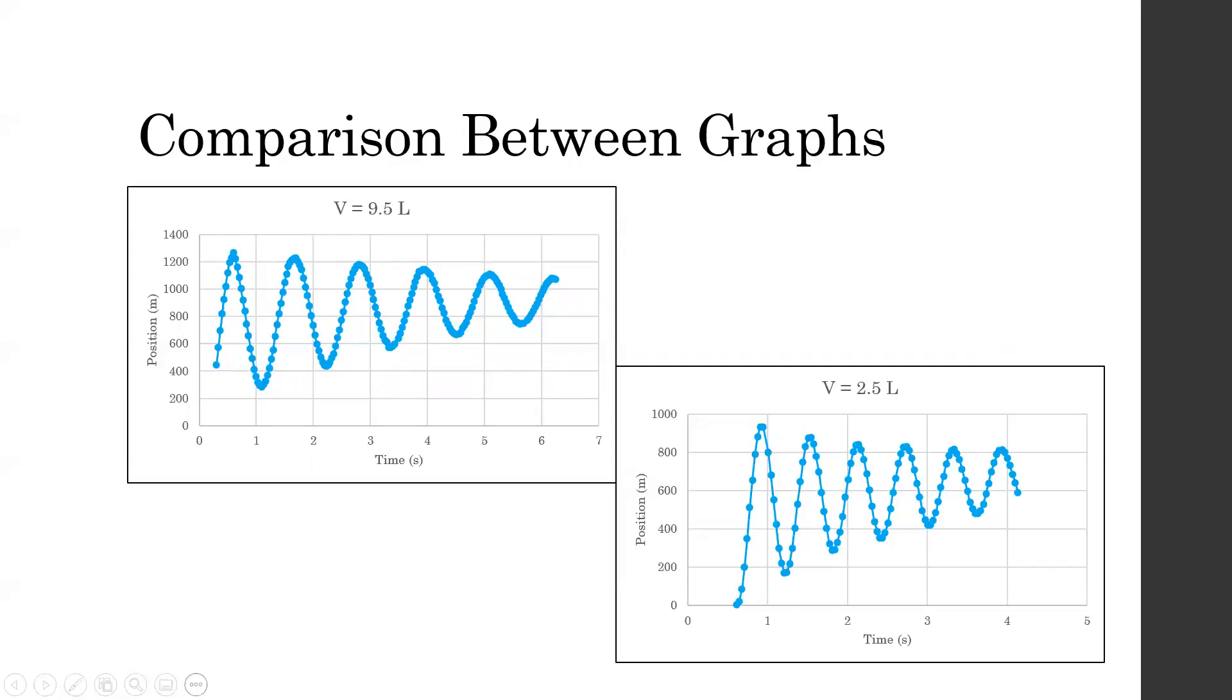This is a comparison between the longest period of oscillation and the second shortest period. The data points show a clear oscillatory motion with consistent periods for both. The important distinction between the two is the number of data points. The trial at 9.5 liters has many more data points than at 2.5. This is due to the greater volume trial having a longer period, thus resulting in slower motion of the ball.